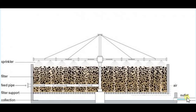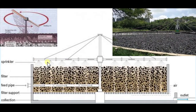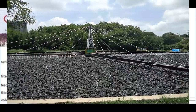This is the trickling filter. If you see in this image, there is a feed pipe where wastewater enters, and then it goes through the middle pipe and is distributed all throughout the trickling filter with the help of rotating sprinklers.